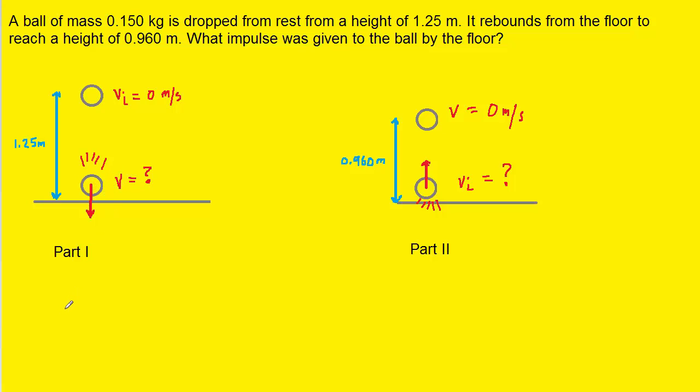And to do that, we can use the following equation from kinematics. So in this equation, we have the final velocity on the left side, and then we have the initial velocity, acceleration and vertical displacement, which we've called delta y.